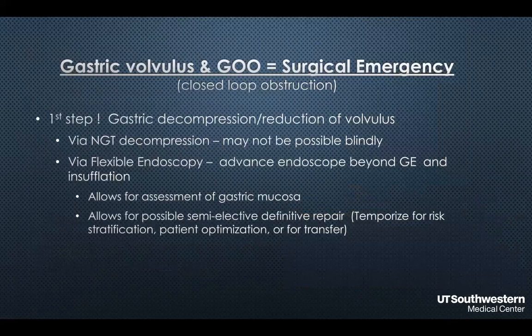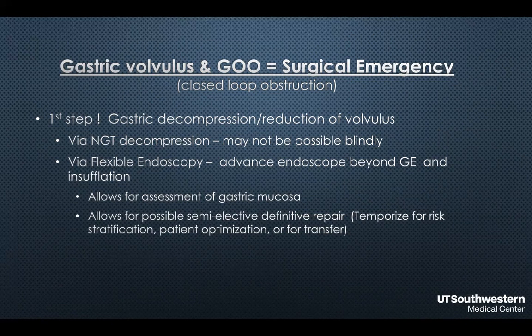When you have a patient with gastric volvulus and gastric outlet obstruction, this is a surgical emergency representing a closed-loop obstruction. The very first step is gastric decompression and reduction of the volvulus — with an NG tube if possible, or via flexible endoscopy if not. As you advance the scope toward the GE junction with gentle pushing and insufflation, you can actually reduce the volvulus, then decompress the stomach and assess the gastric mucosa for ischemia. This allows for semi-elective definitive repair and patient optimization, including transfer to a higher level of care if needed.